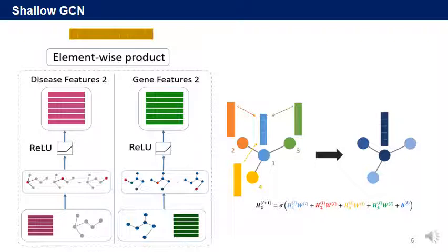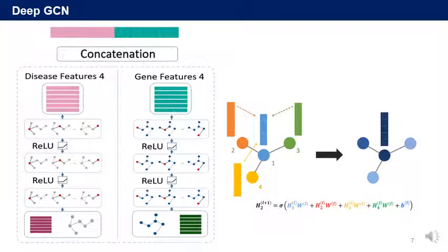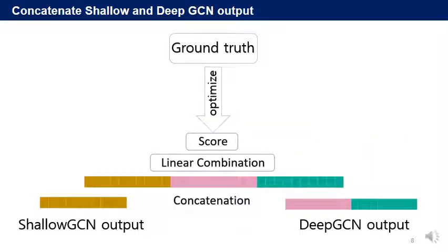The values collected on each node go through the activation function and become a new feature. In the deep model, three GCN operations are performed. Then we concatenate a pair of output features. After concatenating the result vectors of shallow GCN and deep GCN, we calculate the score by linear combination.